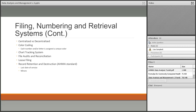Loose filing refers to documents that come down to the HIM department after a chart has already been picked up from the floor — lab results, physician orders, discharge instructions. These stray pieces of paper must be taken and incorporated back into the chart if it has already been assembled.